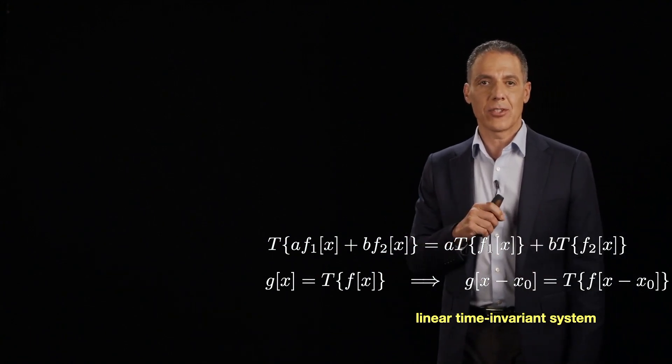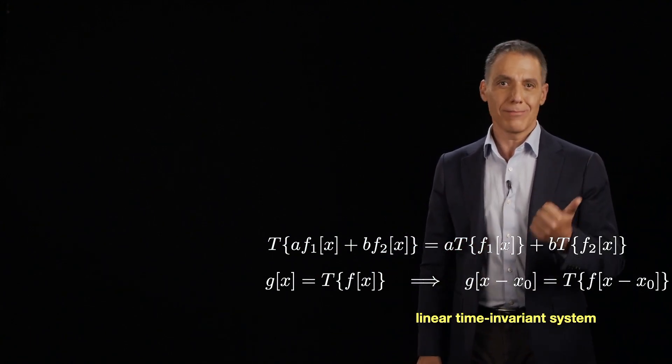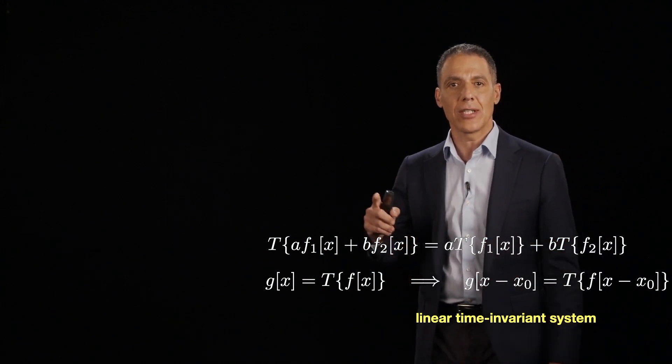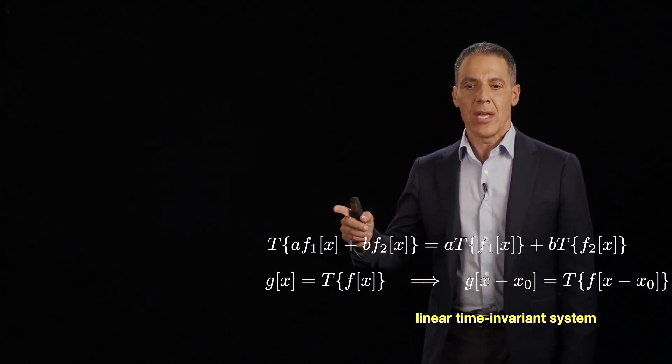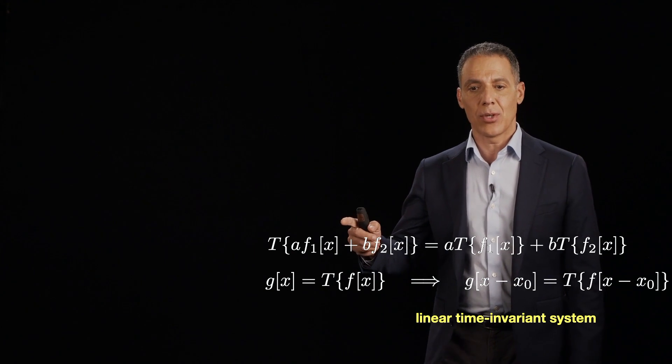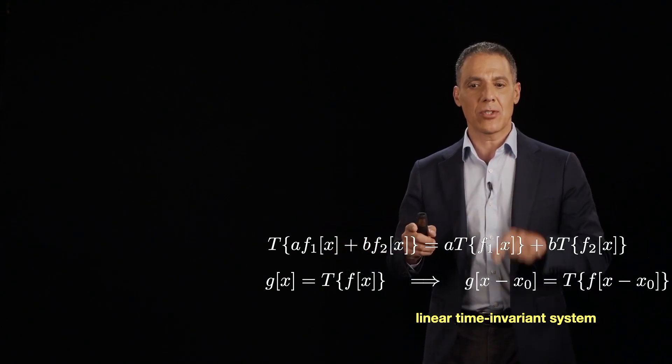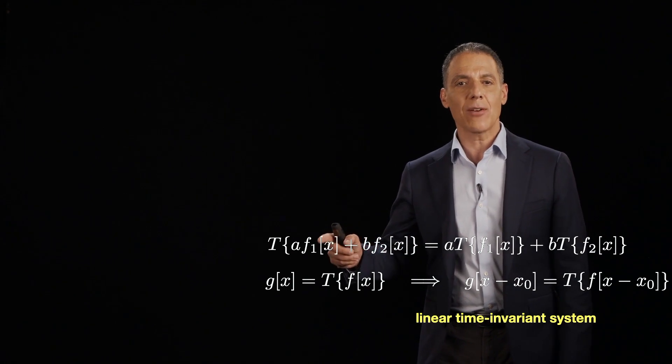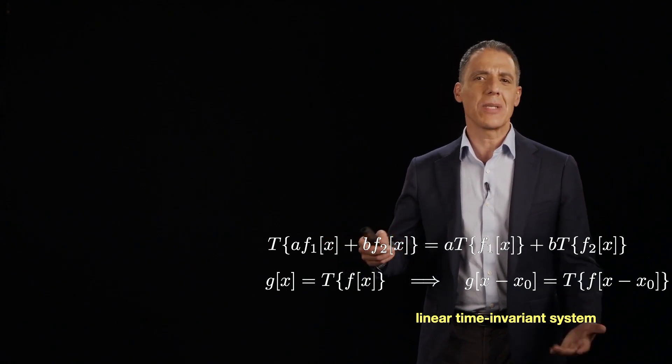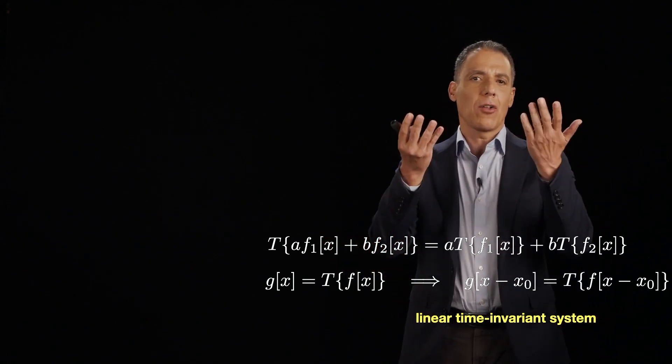These linear time invariant systems have two properties. They are linear and time invariant. So I'm gonna take a signal as input. I have f_1 and f_2, so two discrete time signals, and I'm going to scale them by a and b. What does it mean to scale a signal? Just multiply all the values by a.